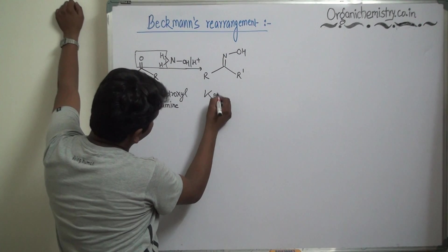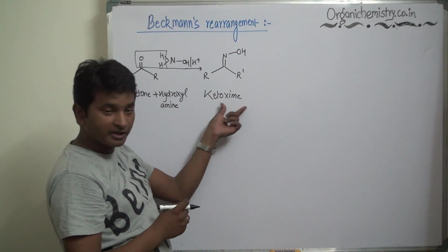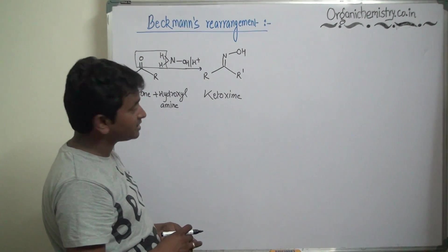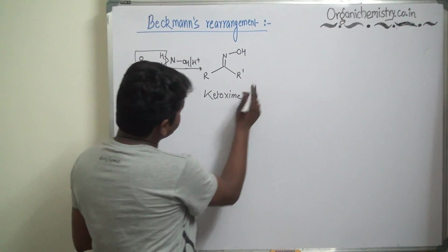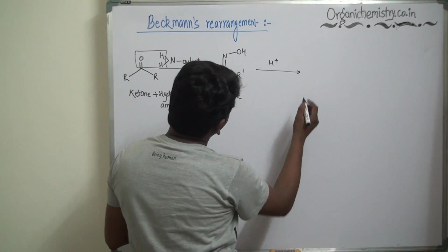That is oxime derived from the ketone. Then this is the substrate of Beckmann's rearrangement. This ketoxime on treatment with acid rearrange itself to give N-alkyl amide.